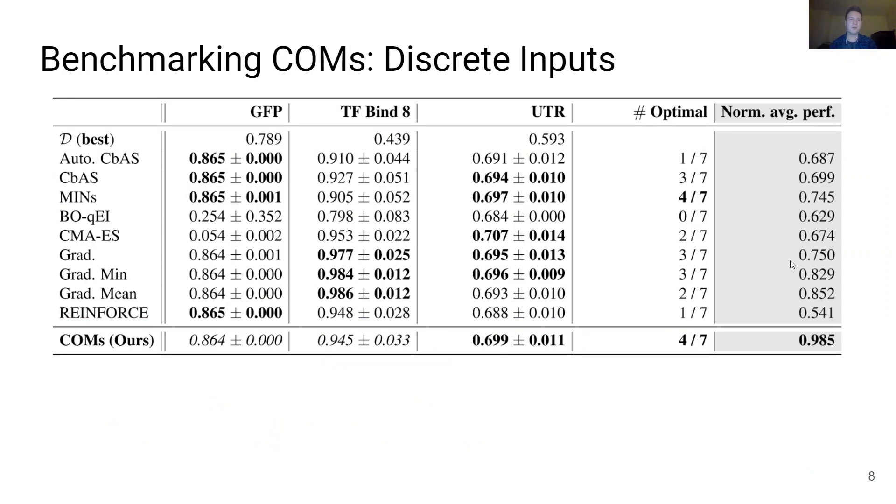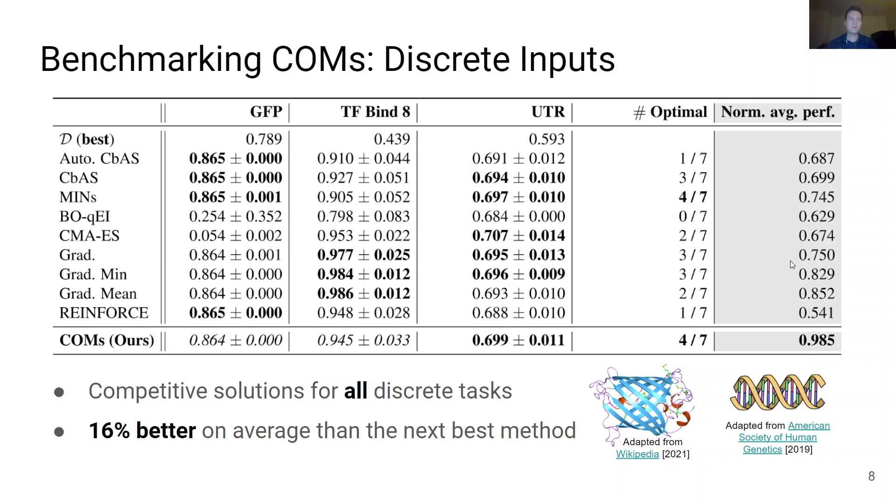Given the competitive performance of COMs on continuous optimization problems, how effective are COMs at solving MBO tasks with discrete designs? To answer this question, we benchmarked COMs on three distinct discrete MBO tasks derived from real-world design problems in biology, including a protein optimization task derived from the green fluorescent protein and DNA sequence optimization. We find that COMs obtained competitive solutions for all discrete tasks that we tested and COMs are 16% better on average than the next best method we tested across the entire benchmark.